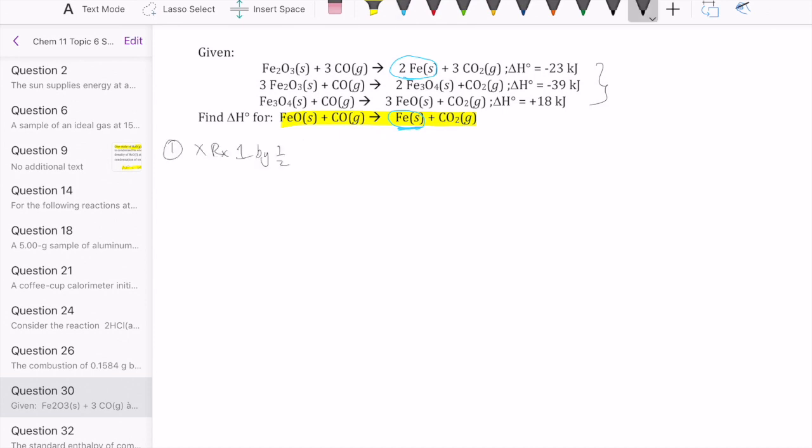Now this is what's going to happen when you do that. You're going to get half Fe₂O₃ plus three halves CO goes to Fe and three halves CO₂. The delta H is going to be negative 23 times a half, which is just negative 11.5 kilojoules. So that's the first one.